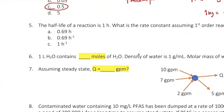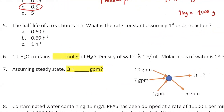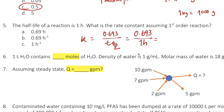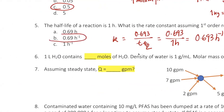Question five: the half-life of a first-order reaction is one hour; find the rate constant k. Using k = 0.693 / t½ = 0.693 / 1 hour = 0.693 hr⁻¹. The correct unit is hour inverse.